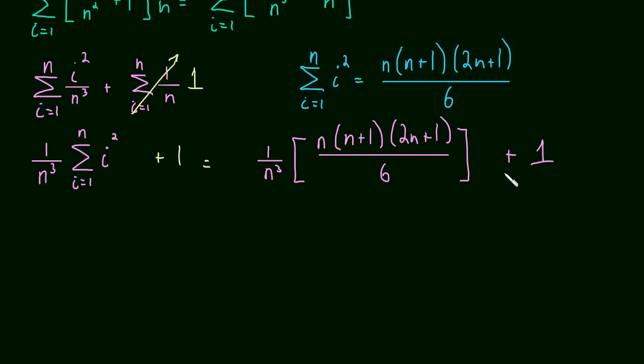Okay, so now we have a really nice, neat, simple expression for our estimate based on the number of rectangles we have. We could choose a million, we could choose a trillion, we could choose a bigger number than that. We could choose as big of a number as we want. We just plug it in for n, and that will give us our estimate.